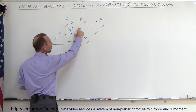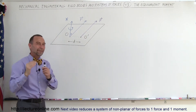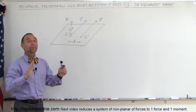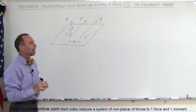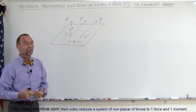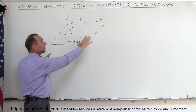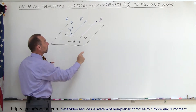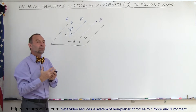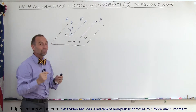Notice that when we move the force from O to O prime, the direction and magnitude of the force must be the same, otherwise the effect on the object will be different. But when you move the force you will cause a different moment to exist. What we're trying to do is find the equivalent effect of this moved force that will still have this particular moment.